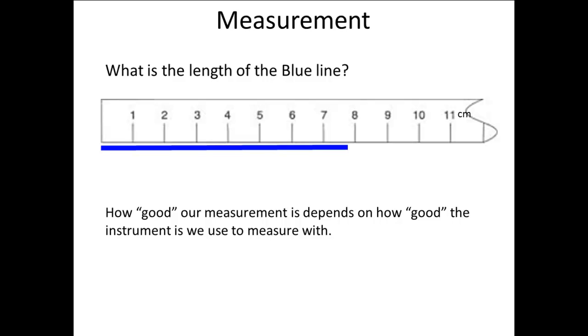So, here is our better instrument, a centimeter ruler. Now, we can actually read a digit off the scale. Our line is longer than 7 centimeters, and shorter than 8 centimeters. Again, we get to estimate how close it is to 8 centimeters.